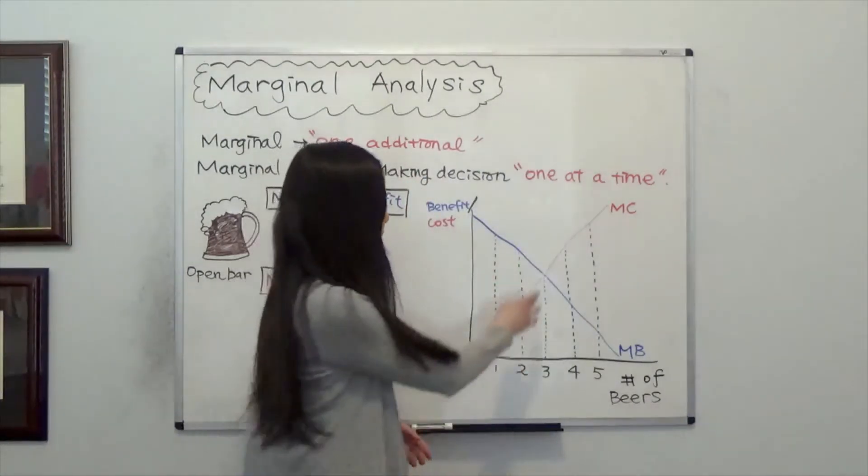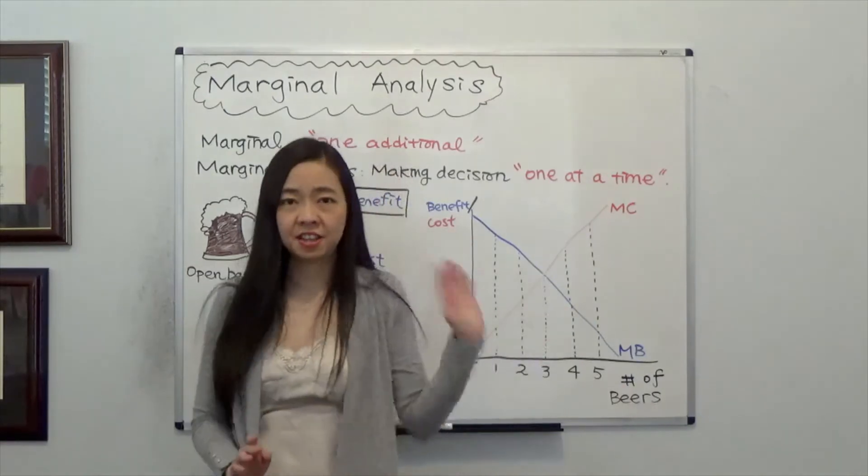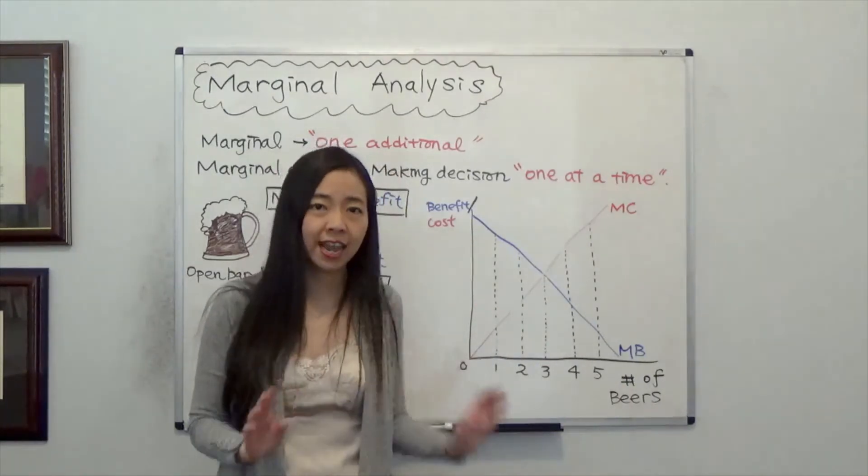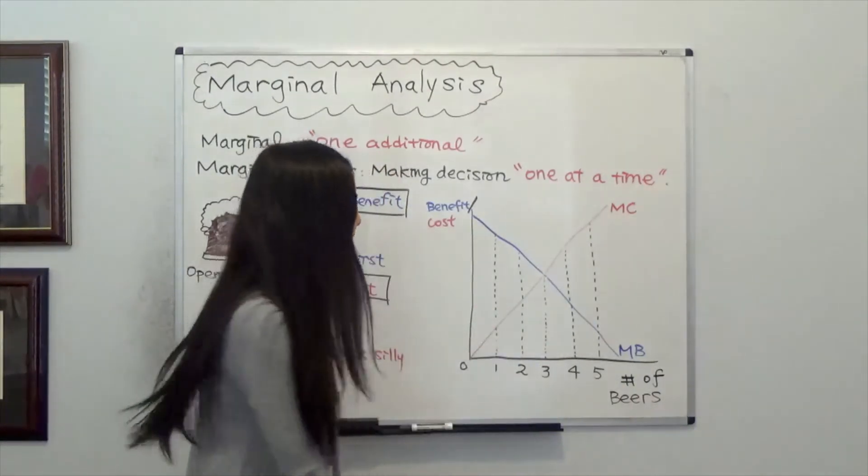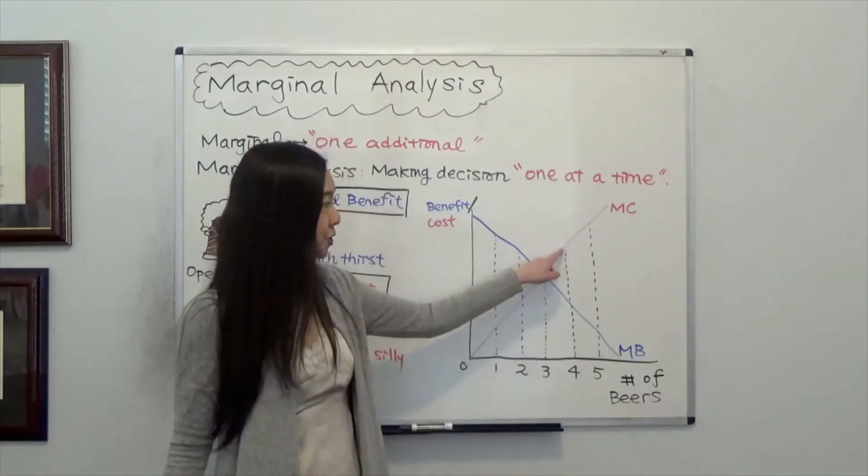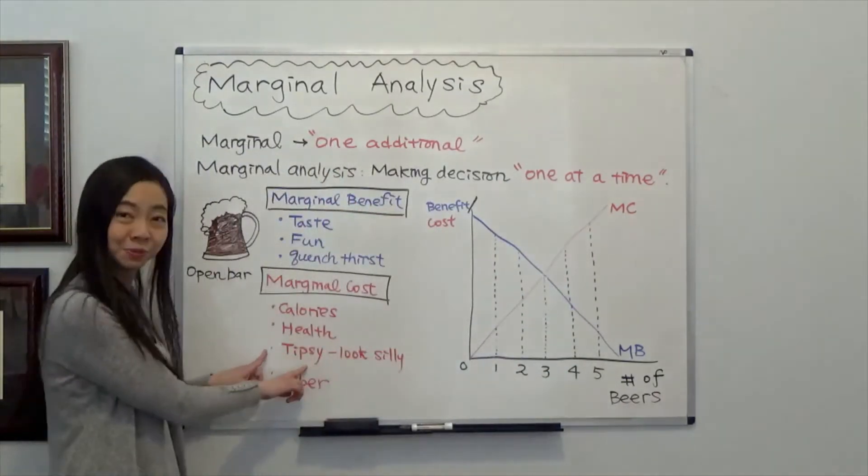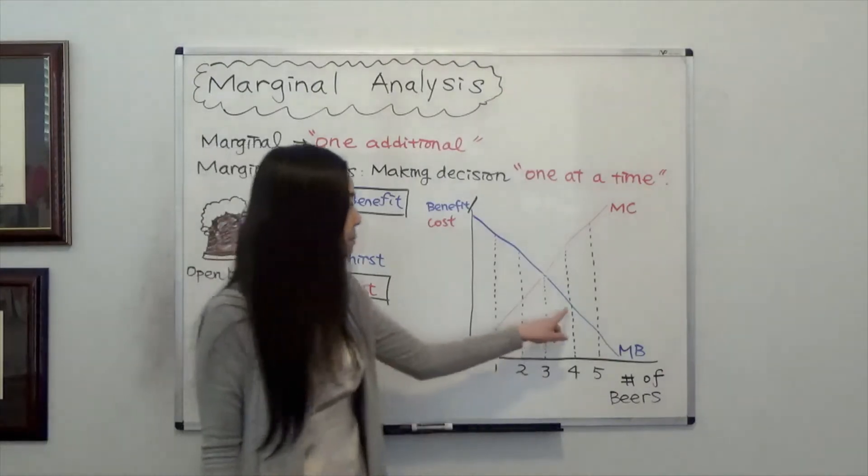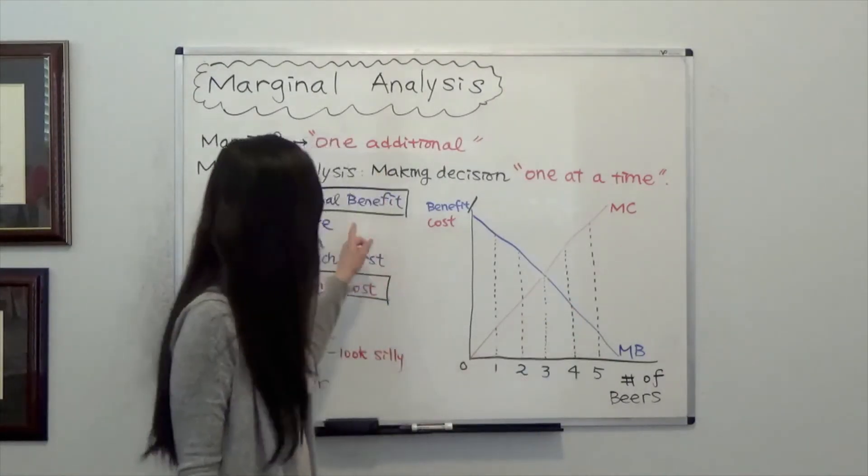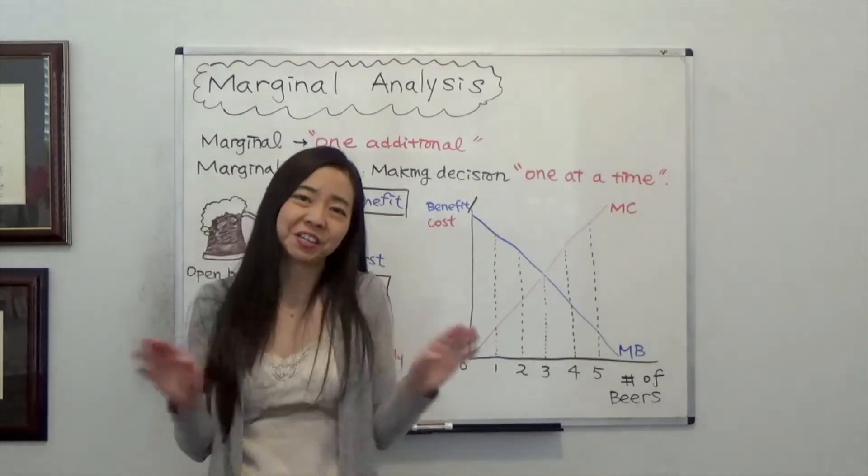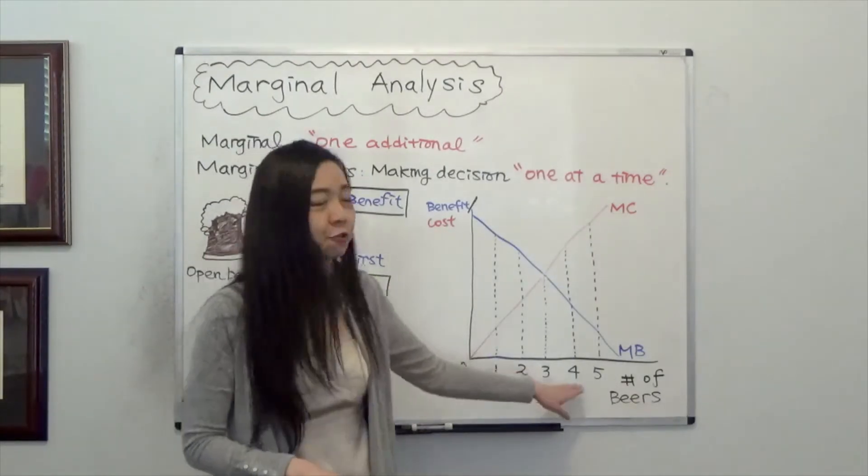Notice that after the third can, it does not make sense for you to drink any more beer. Why not? Think about the fourth can of beer. The marginal cost of feeling tipsy is higher than the marginal benefit of the good taste of the beer. So it does not make sense for you to drink the fourth can.